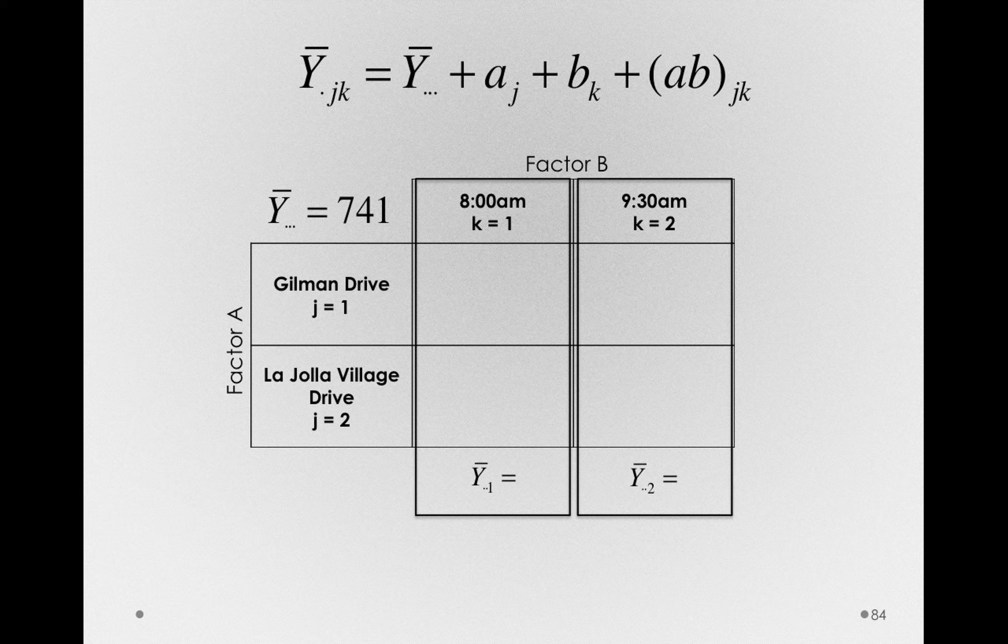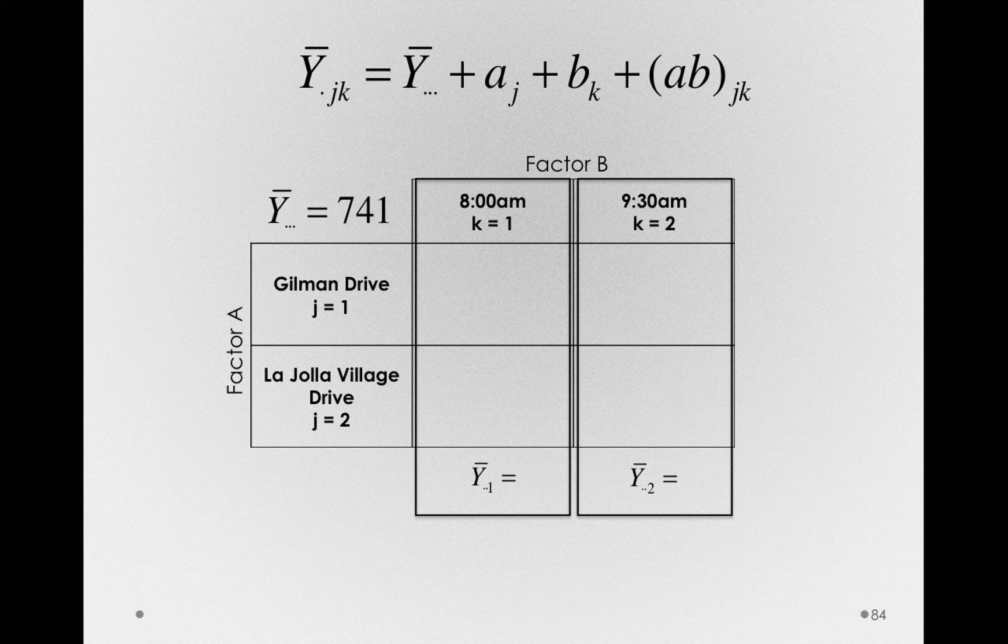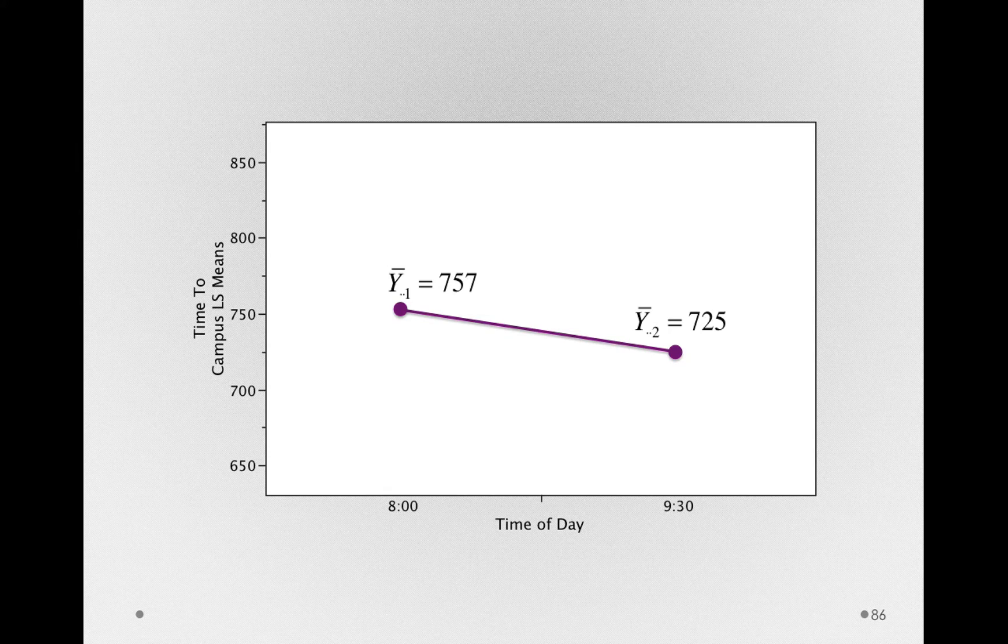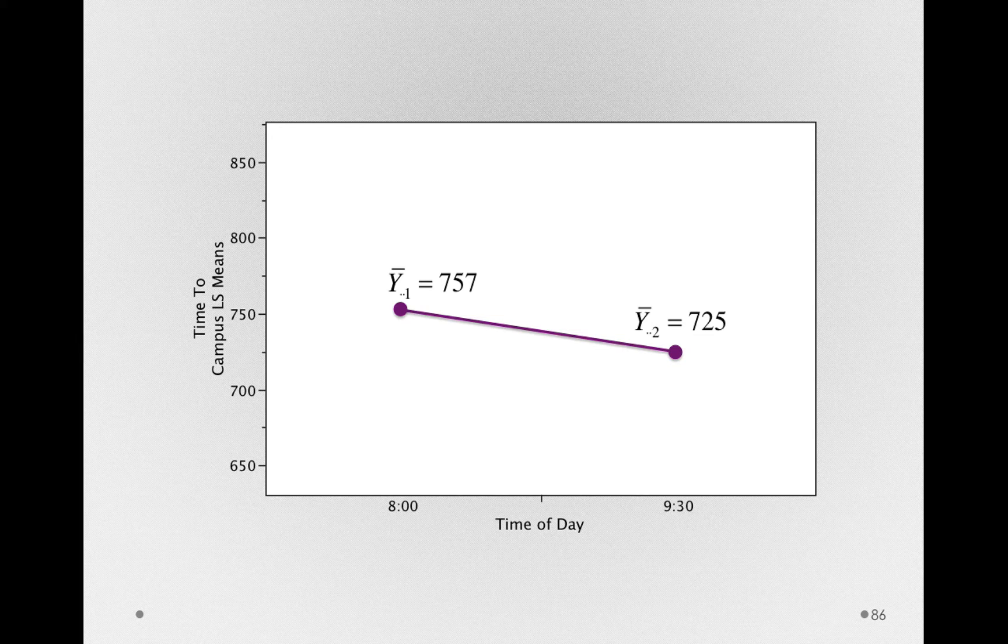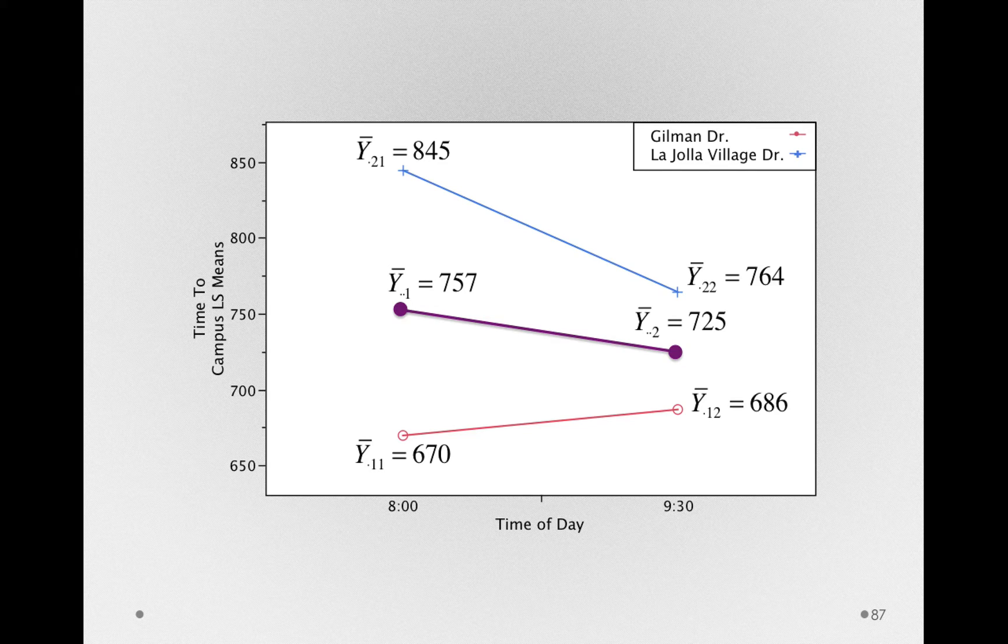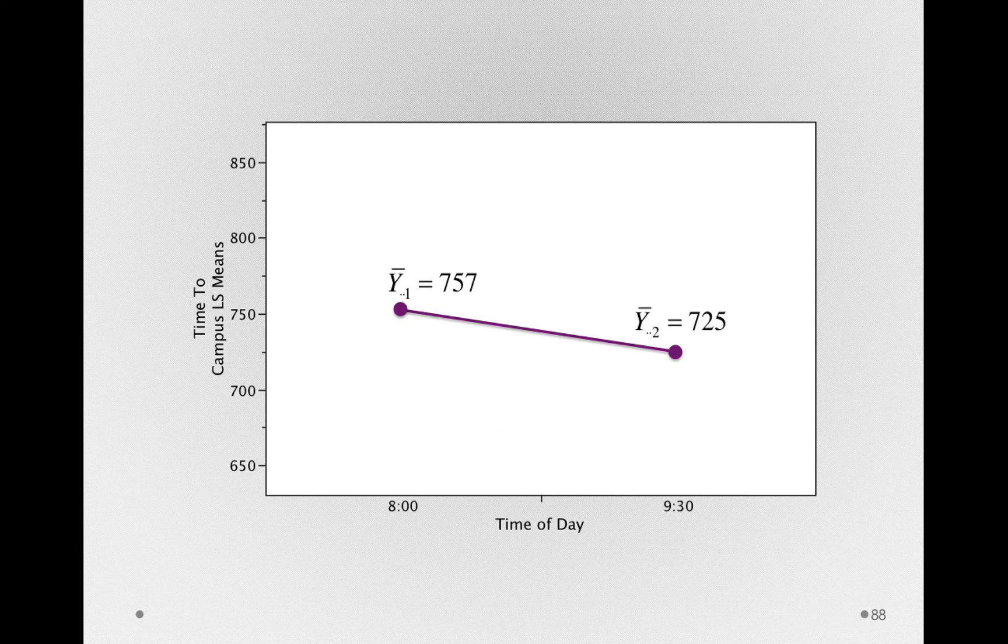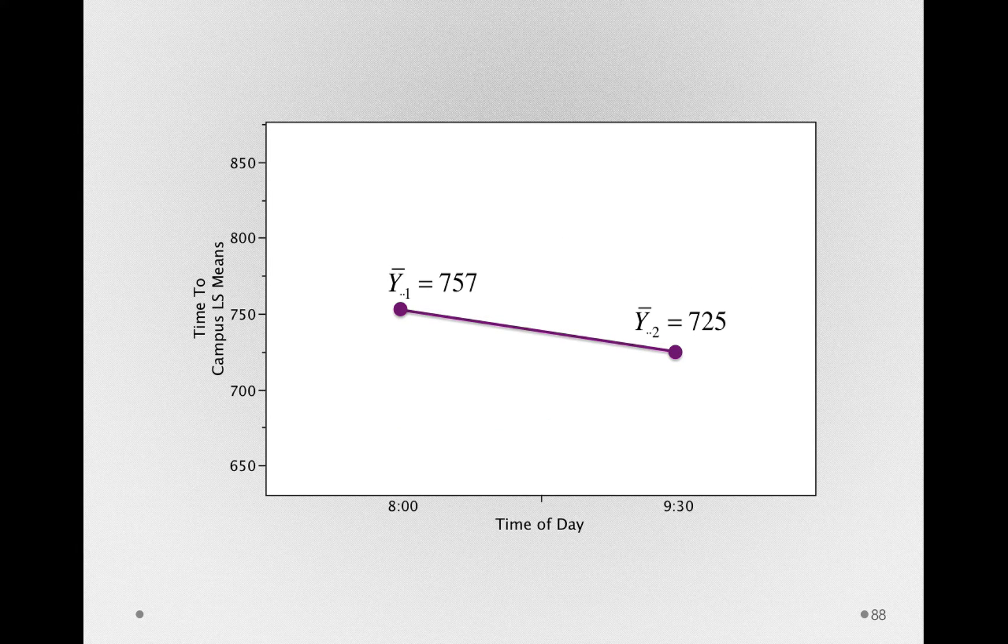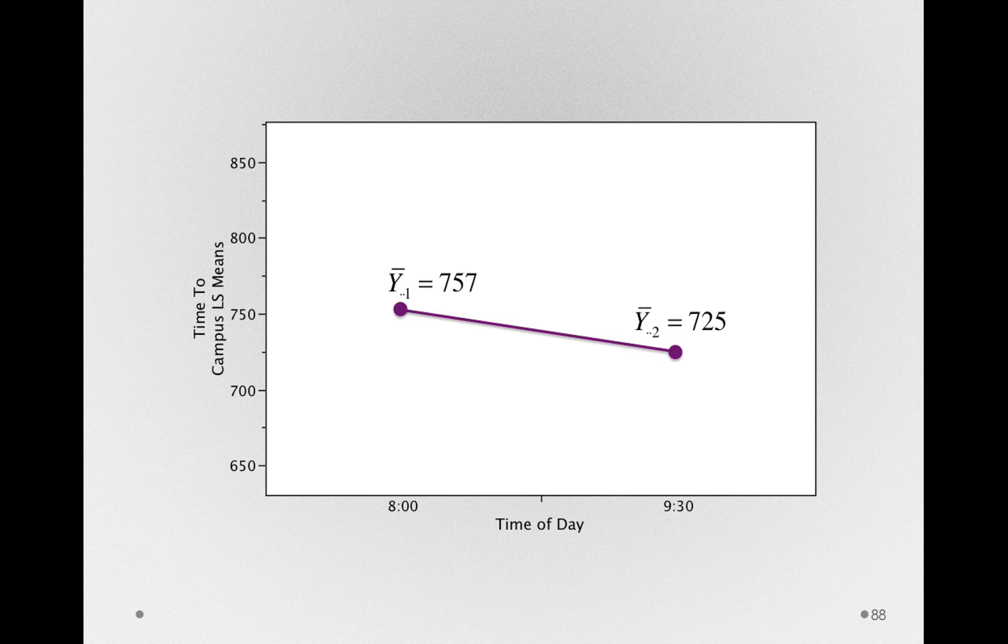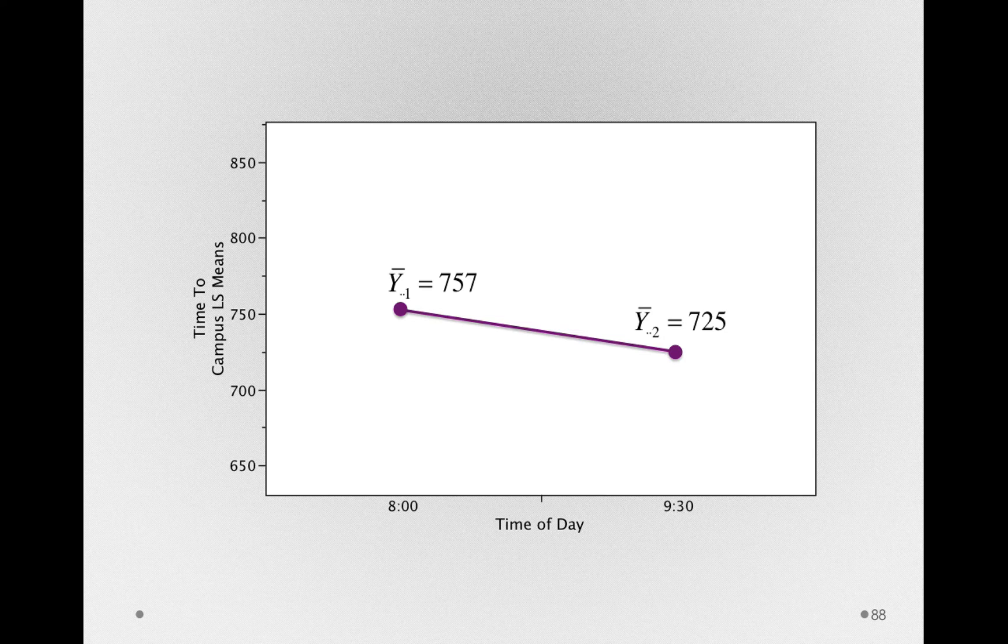Notice in the notation even we're ignoring factor A. We have the additional dot there to show we're averaging over the different routes. Now, we already saw these means before in the factorial plot. We found these means by simply ignoring the different routes. Recall that we found this line by simply looking at the midpoints between, at 8 o'clock, the different routes, and at 9:30, between the different routes. So these means are really just ignoring the different routes in our model. 757 for the overall average, or the marginal mean, at 8 a.m., and 725 as the overall average, or marginal mean, at 9:30.